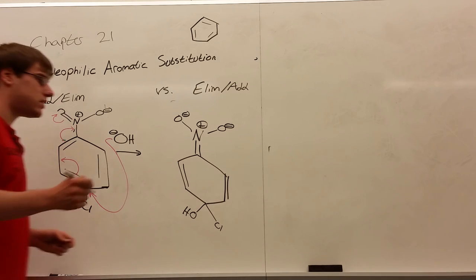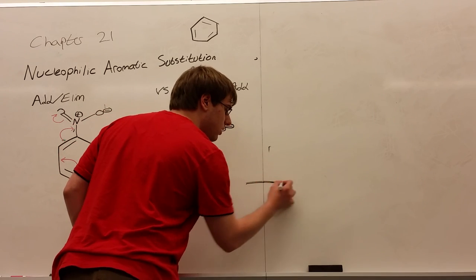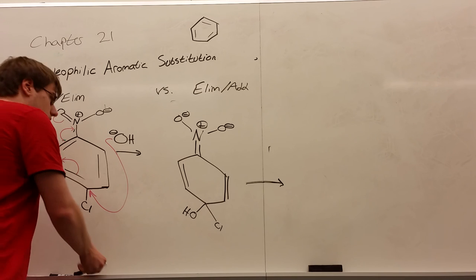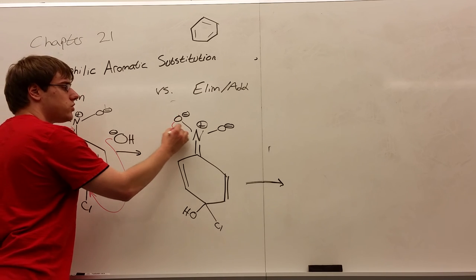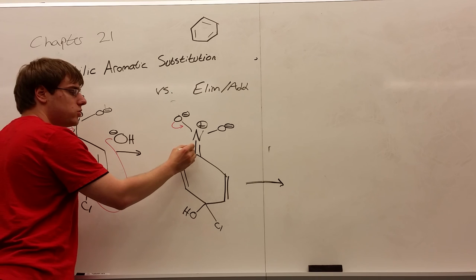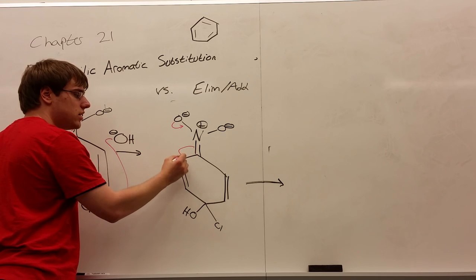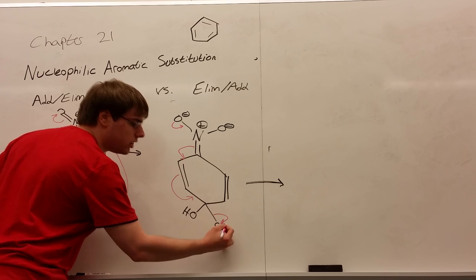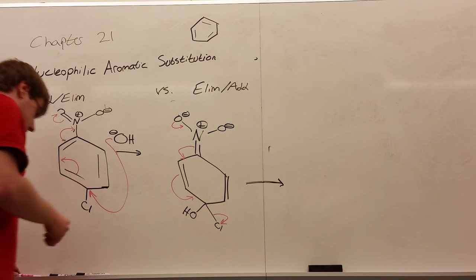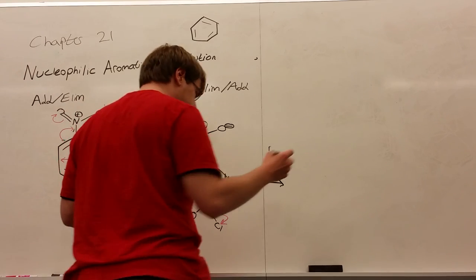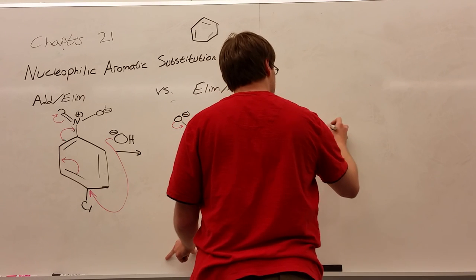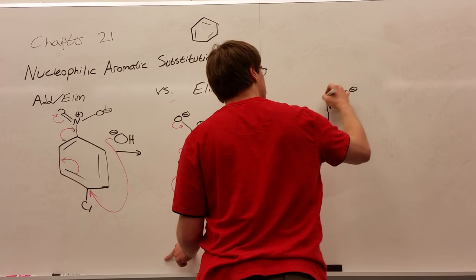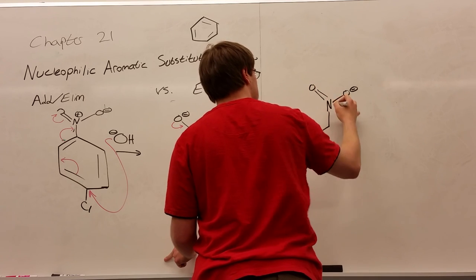Now, what happens next is we need to kick that chlorine out, and the way we do that is we reform the benzene ring. The electrons from one of these oxygens will swing back down, reforming its double bond. The double bond between the carbon and the nitrogen will resonate into the ring, reforming your benzene and kicking out your good leaving group. And so this is the general mechanism of your addition-elimination reactions.